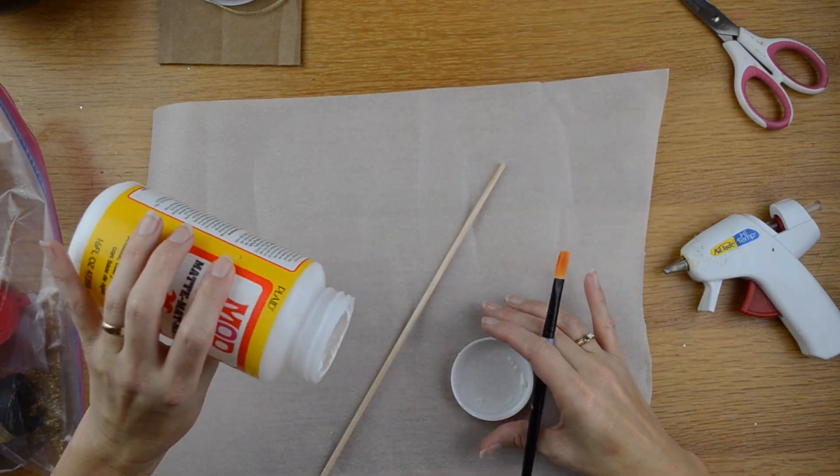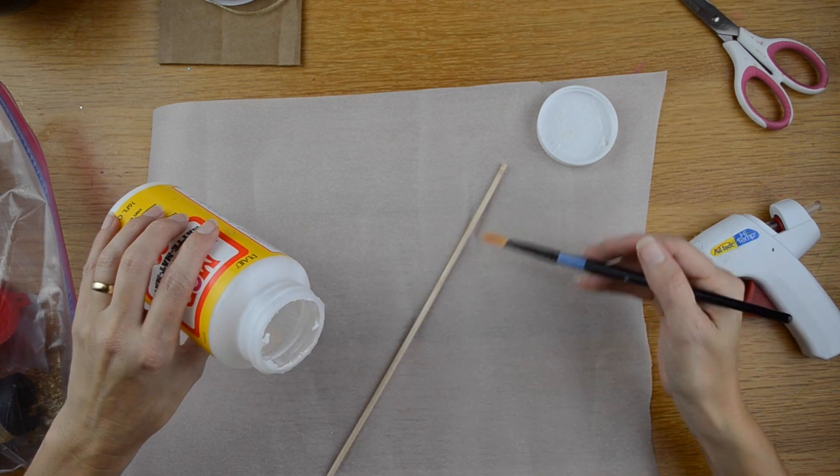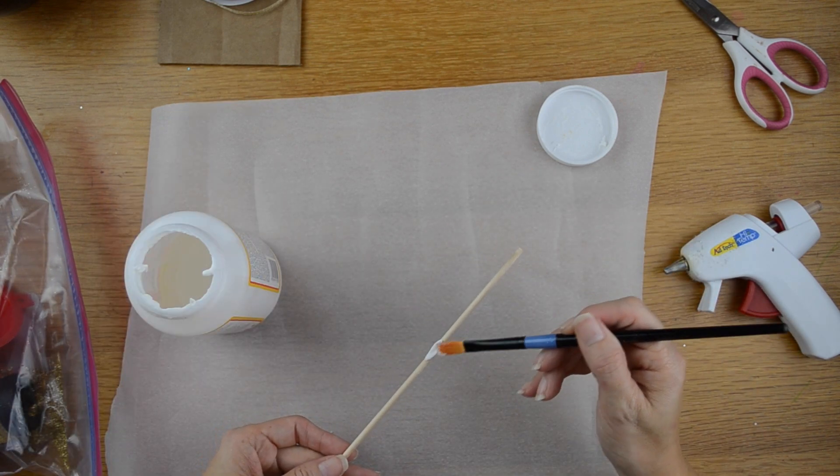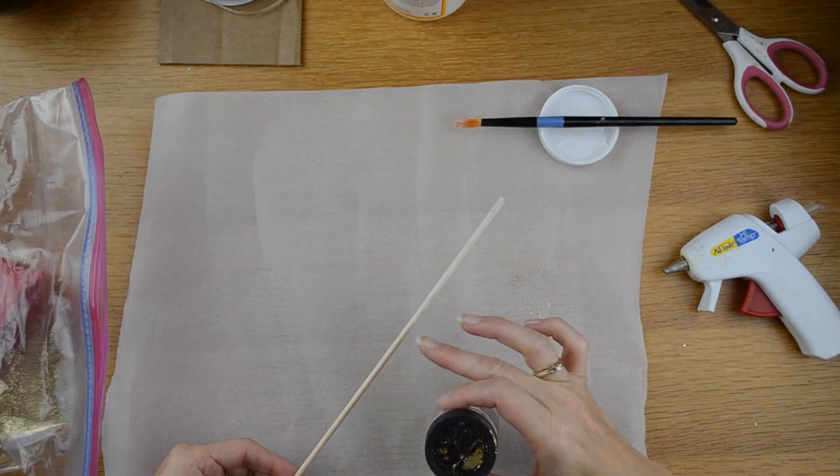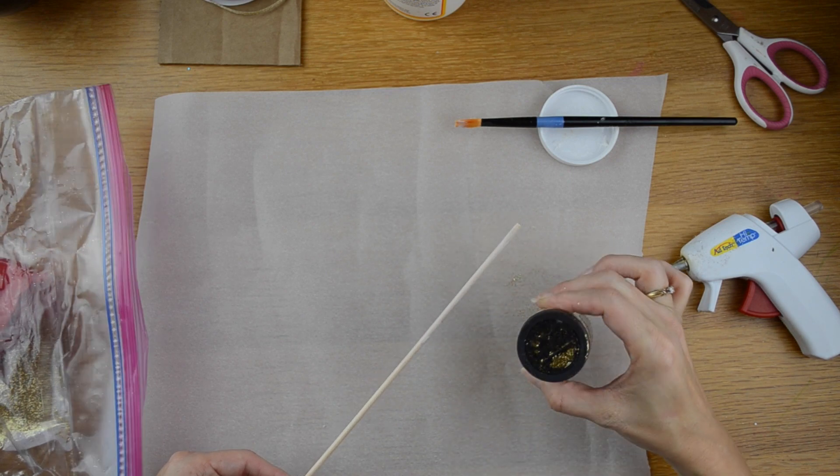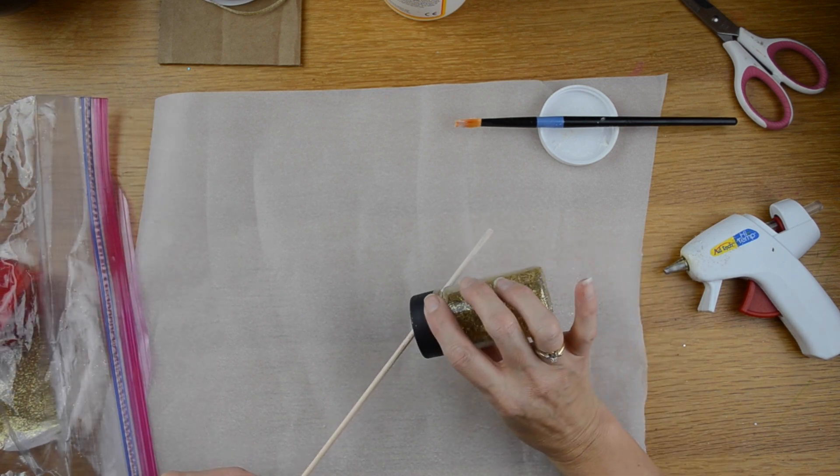I'm going to first start off by taking some of the Mod Podge glue and putting it on to my paintbrush and then I'm going to put it onto my dowel rod. So I put a little bit of the Mod Podge glue onto my dowel rod and now I'm going to sprinkle the gold glitter on part of it.